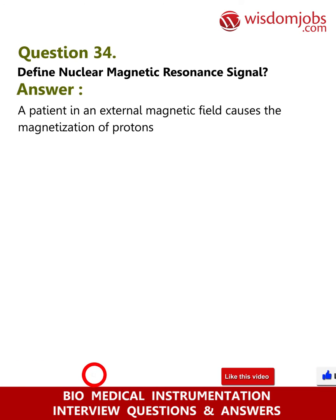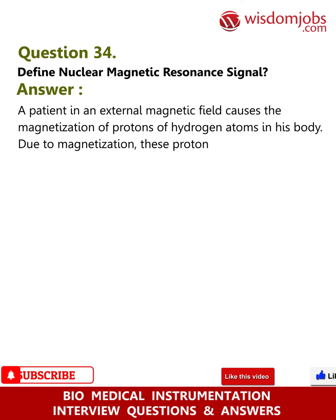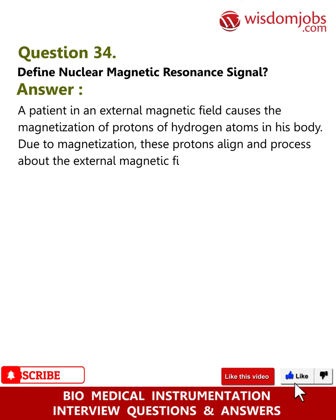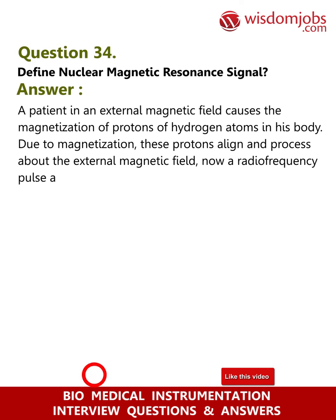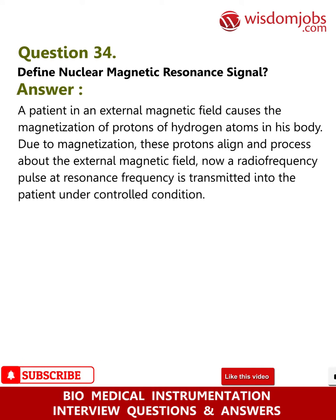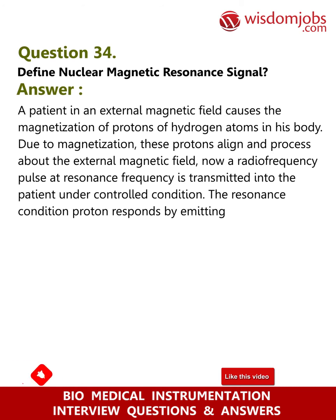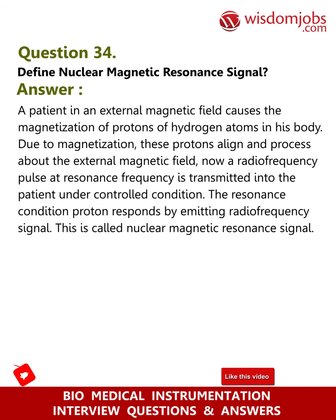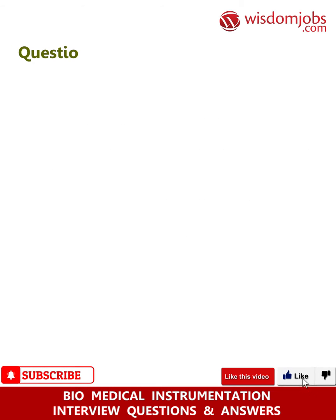Question 34: Define nuclear magnetic resonance signal. Answer: A patient placed in an external magnetic field causes the magnetization of protons of hydrogen atoms in the body. Due to magnetization, these protons align and precess about the external magnetic field. A radio frequency pulse at resonance frequency is transmitted into the patient; under the resonance condition, the proton responds by emitting a radio frequency signal. This is called the nuclear magnetic resonance signal.